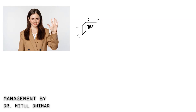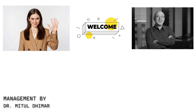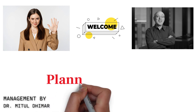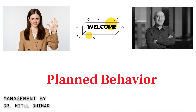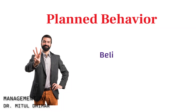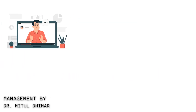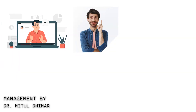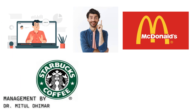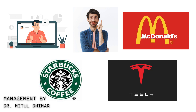Hey everyone, welcome to our YouTube video where we dive into Henry Mintzberg's Theory of Planned Behavior. Mintzberg's theory breaks it down into three key factors: Beliefs, Social Influences, and Perception of Control. Today we will explore each of these elements with real-life examples from the corporate world.